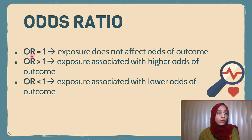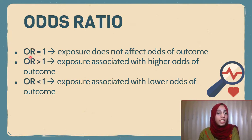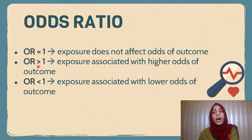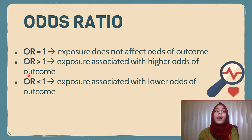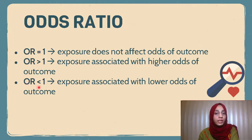If the value of the odds ratio is 1, the exposure did not affect the odds of outcome. If the odds ratio is greater than 1, the exposure is associated with higher odds of outcome. If the odds ratio is less than 1, the exposure is associated with lower odds of outcome.